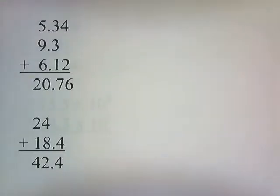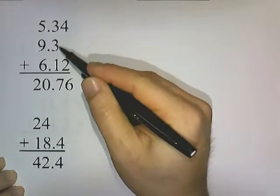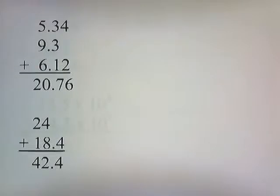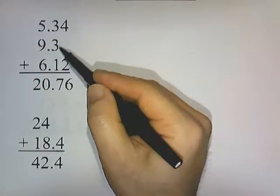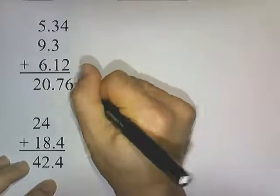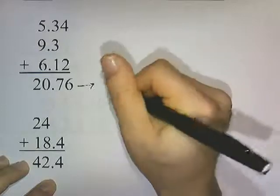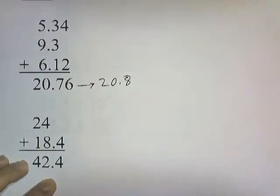Let's try some practice problems. 5.34 plus 9.3 plus 6.12: the raw answer is 20.76. The first number has two decimal places, the second has one, and the third has two. Our final answer can only have one decimal place — the fewest — so this rounds to 20.8.